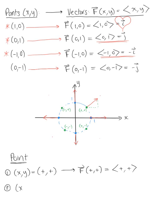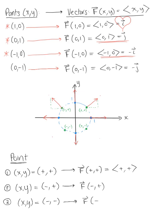For an arbitrary point in quadrant 2, x is negative and y is positive, so we're moving in the negative x and positive y direction — the vector points up and to the left. For quadrant 3, both components are negative, so the vector points in the negative x and negative y direction — out and down.